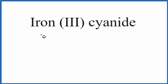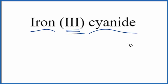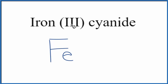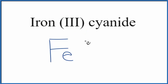In this video, we'll write the formula for iron 3 cyanide. The first thing we'll do is write the element symbol for iron — that's Fe. We know that it has a 3 plus charge. These Roman numerals tell us we have a transition metal, and that the charge is 3 plus.